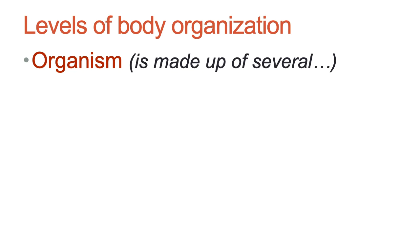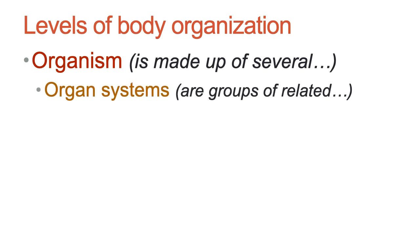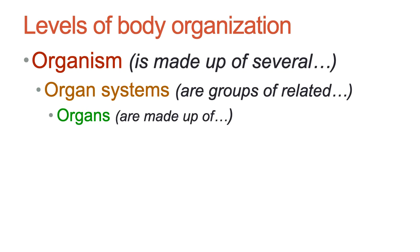So before we move on to discuss the different organ systems and structures of the body, it's helpful to consider the structural hierarchy — that is, how an organism is assembled from smaller and smaller components. The human organism, which is what we study in Anatomy and Physiology, is composed of multiple organ systems. These organ systems work together to keep the human functioning. Organ systems themselves are groups of related organs, coordinated to perform a particular function.